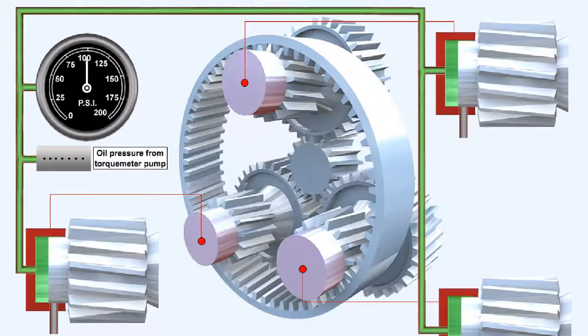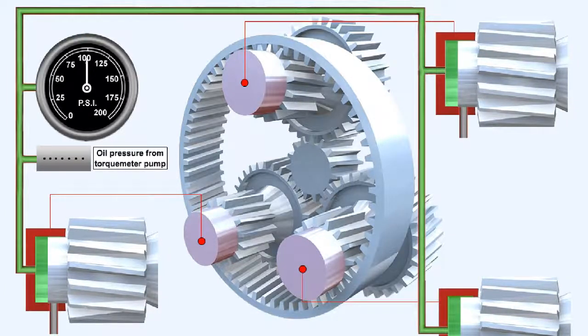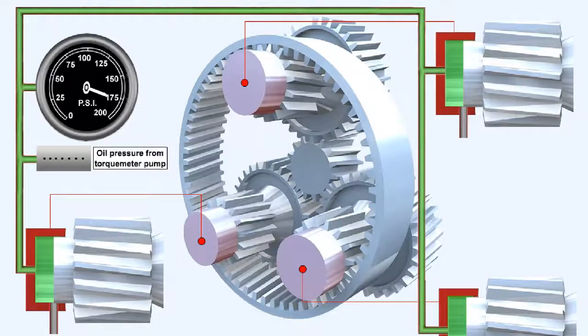If engine power output increases, the axial thrust being transmitted by each gear also increases, which forces its shaft further into its retaining cylinder. Thus the shaft is forced into a new position where it blocks the bleed hole. The torque meter oil pressure, being unable to escape, now builds up to a new higher value, until it's able to force the gear shaft back into the sensitive position, where once again it's able to balance the axial thrust being developed by the helical gear.